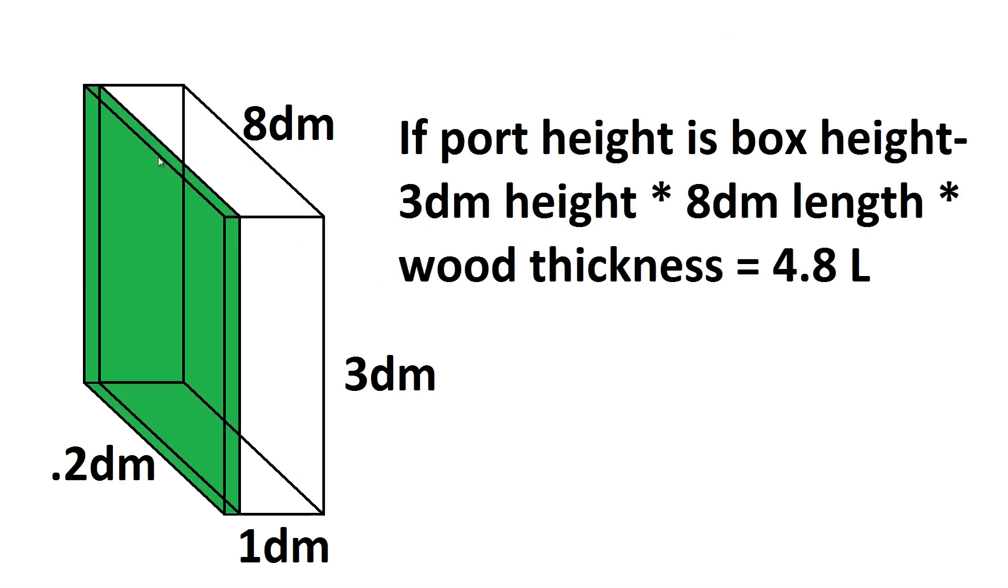Now, of course, we can't just have this volume of air floating in there; we need a bit of baffling in order to create the port. So here we've got a port length of eight decimeters, also a thickness of 0.2 decimeters and a height of three decimeters. When we plug all this in, we get a volume of 4.8 liters for the wood displacement.